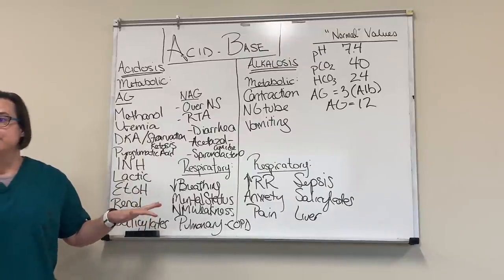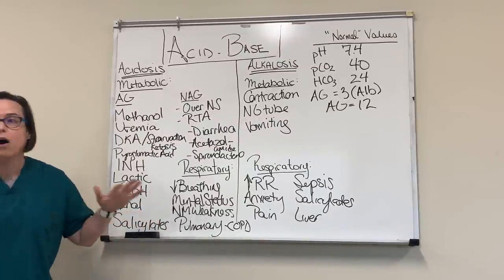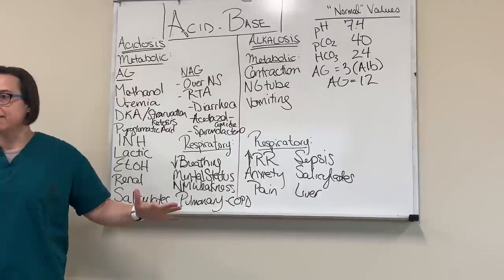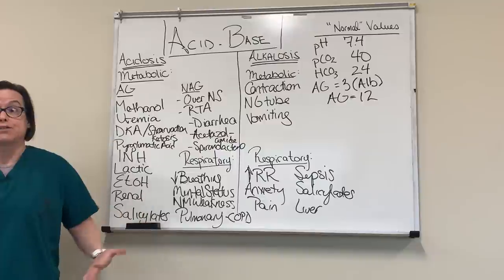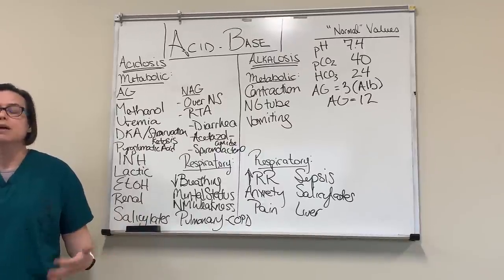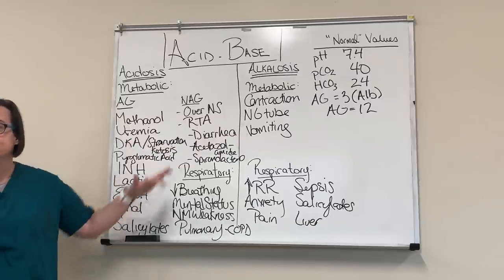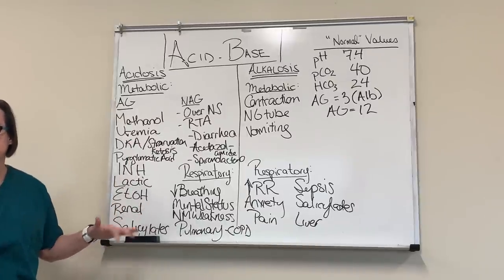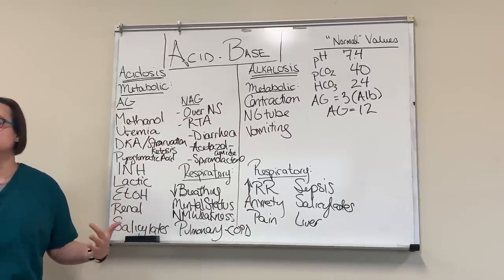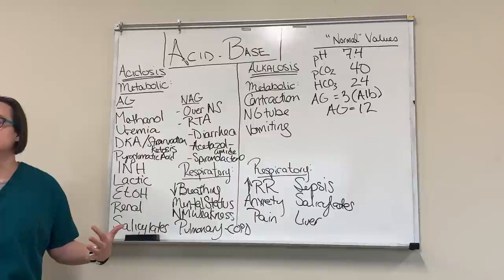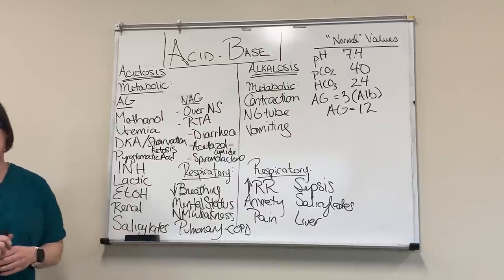My biggest pet peeve with acid-base disorders is we do all these calculations and all this math, but then we don't take the time to figure out what actually caused the underlying disorder and how to fix it. So I want you to always keep these etiologies in mind as we do each problem — think, what applies to my patient, what do I need to look for most closely, and what can I do something about?